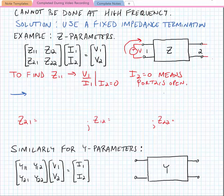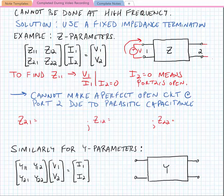The challenge with this is that we can't make a perfect open circuit at port 2. The reason for that is there's always some parasitic capacitance that we have to be concerned with that shorts the port 2, particularly at high frequency.